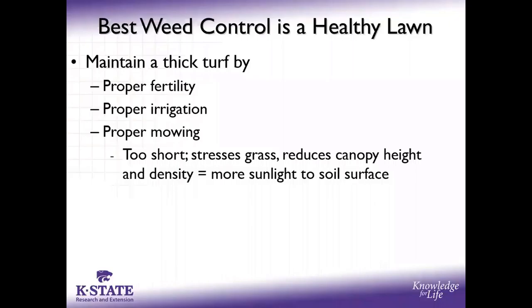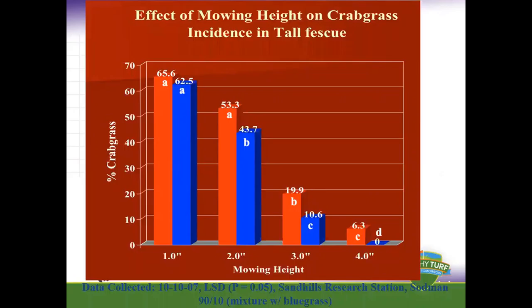Proper fertility, irrigation, and mowing — our optimum mowing height matters. I did an entire study on mowing grass at different heights to see the population of different weeds, specifically crabgrass. If you mow a tall fescue lawn at one inch, you're going to get about 65% crabgrass in that area. If you mow at the proper height, you're around 15%. At four inches, there's little to none — though we don't recommend four inches because of safety issues with lawnmowers and increased disease problems.